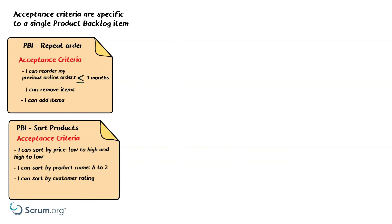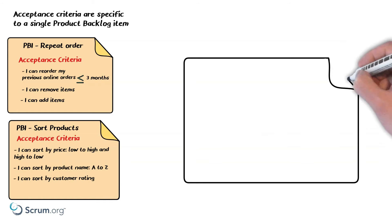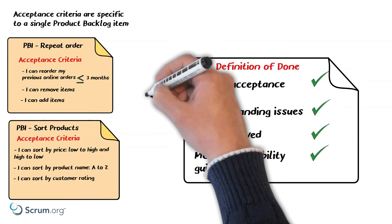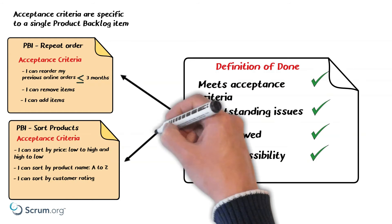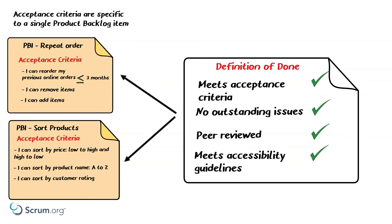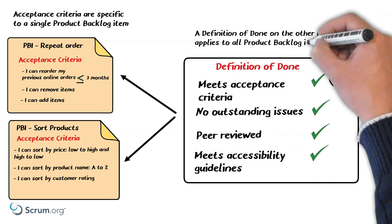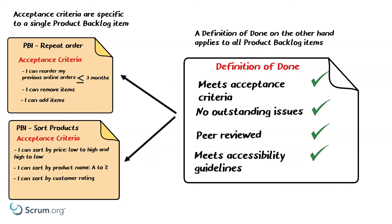Robin then brings up an example of a definition of done and asks the same question: could the criteria of the definition of done apply to both product backlog items? The answer is yes. A definition of done applies to all product backlog items — it ensures a quality standard for the work the scrum team does.